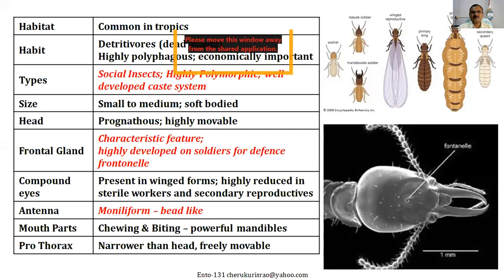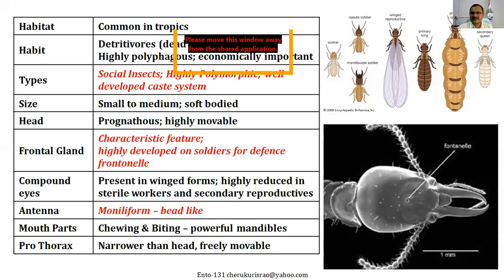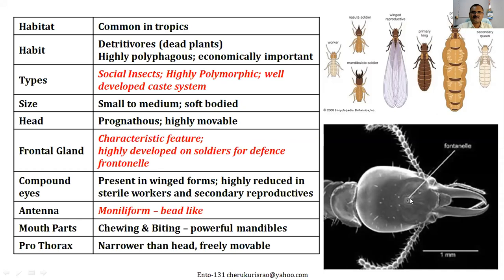Whatever adults you see, they are very soft-bodied, very small. The head is prognathous. Most importantly, some of these castes have a wonderful caste system with division of labor. Some insects are involved in defending and protecting other family members and the termitoria. For protection from enemies, some insects have highly developed defensive systems — either with wonderful mandibles or a characteristic frontal gland which secretes a solution thrown at enemies when disturbed.